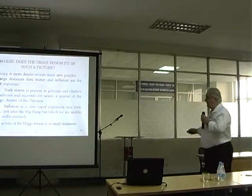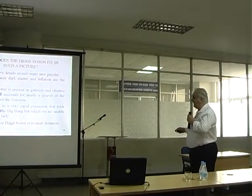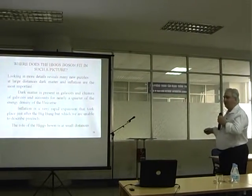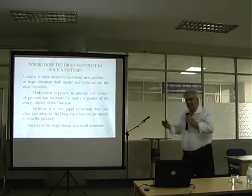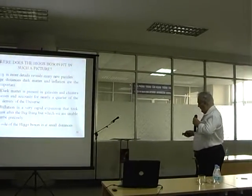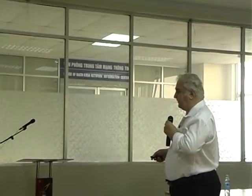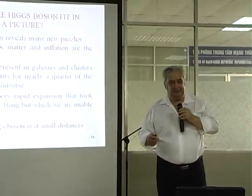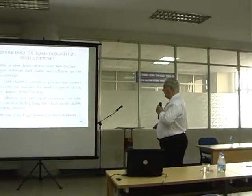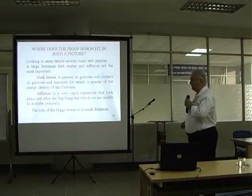Dark matter is something present in galaxies and clusters of galaxies, accounting for nearly a quarter of the energy density of the universe. We have some ideas about what it could be, but we don't know. Inflation is a very rapid exponential expansion that must have taken place just after the Big Bang. We have many ideas about it, because it explains a lot, but we don't have a good model of inflation. Now I want to switch to the Higgs puzzle, which appears when we look at small distances.